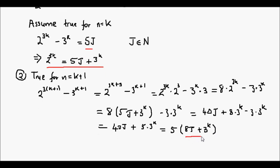This term inside the brackets will always work out to be a whole number if j and k are natural numbers, which they are. And we've got a whole number multiplied by 5, which means it is going to be divisible by 5. So we have proven by mathematical induction that the expression 2 to the 3n minus 3 to the n is divisible by 5 for all natural numbers, for all n greater than or equal to 1.